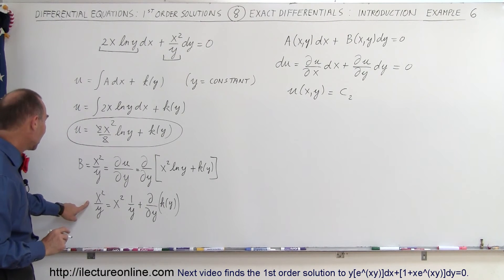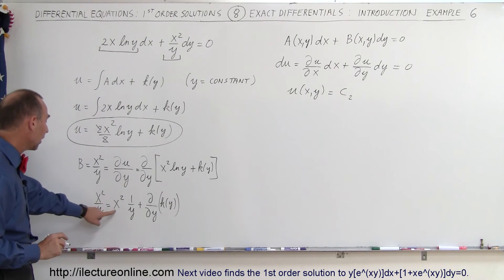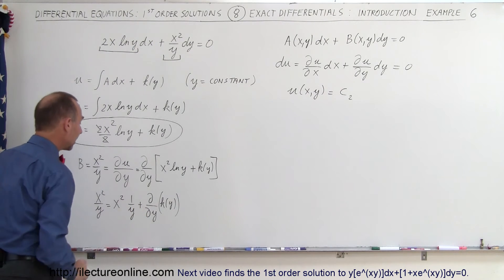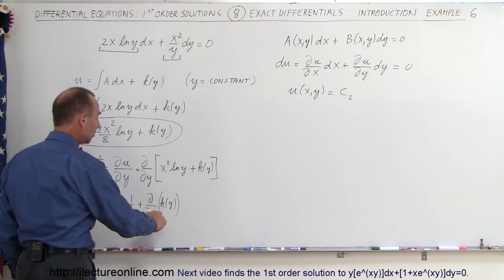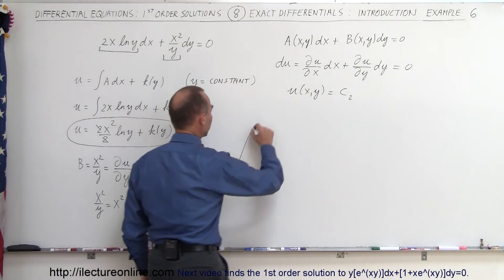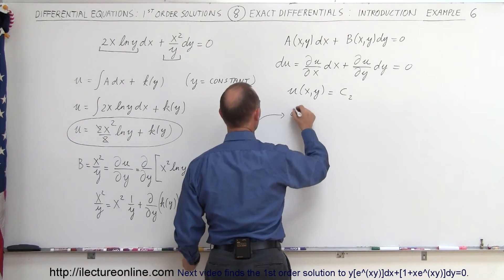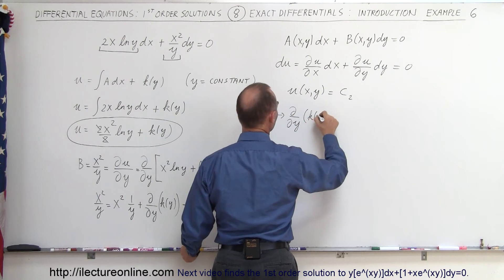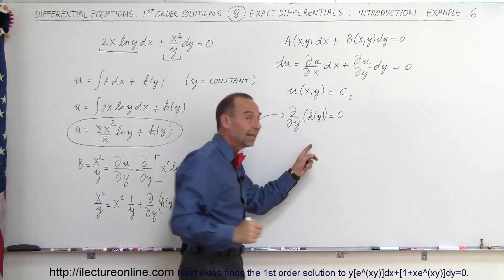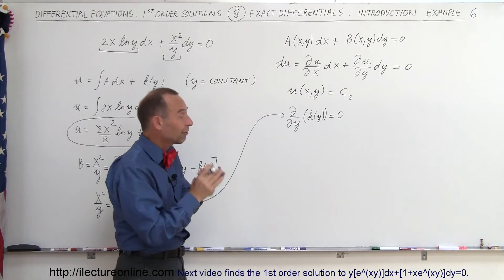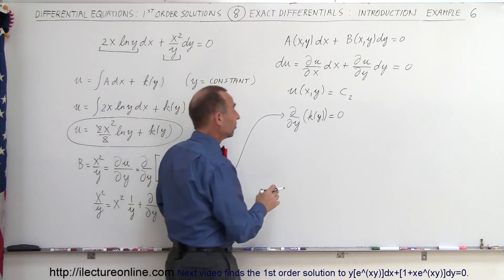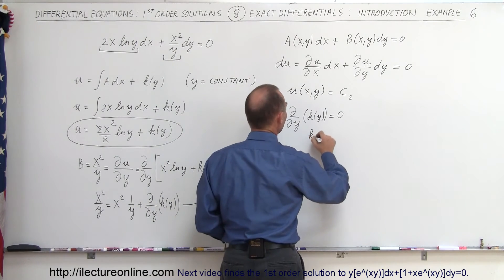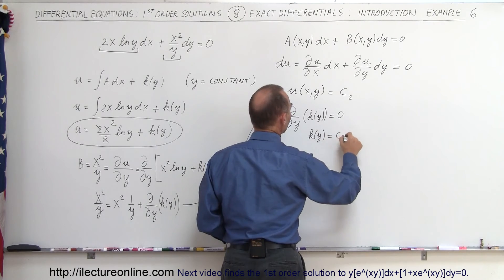On the left side we have x squared over y, and on the right side we have x squared over y plus the derivative of k of y, so the x squared over y terms cancel. This means that the partial of k of y with respect to y equals zero. If the derivative of k of y is zero, then k of y must itself be equal to a constant.